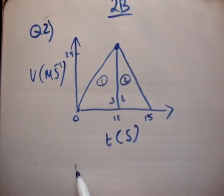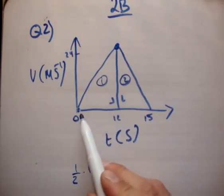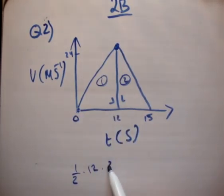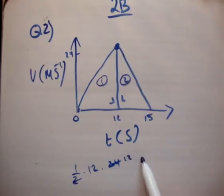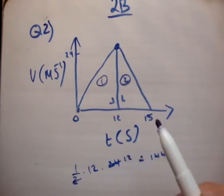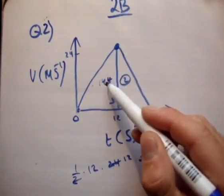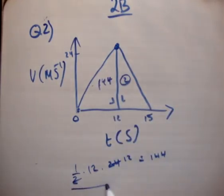Its area is half the base by the perpendicular height. So a half times 12, because that's the distance here between 0 and 12, times 24. So that's equal to 144 meters.